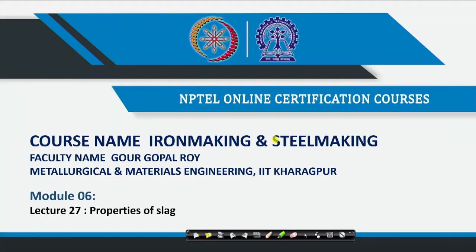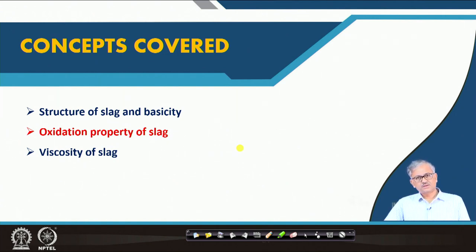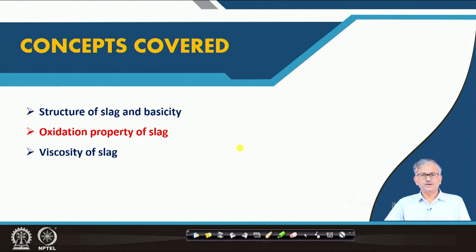This is the second lecture on steelmaking, module six, lecture number twenty-seven. I will talk about the properties of slags because steelmaking is nothing but a slag-metal reaction. We need to understand the slag structure and properties. In this lecture we will discuss the structure of slag, the concept of basicity, the oxidation property of slag, and viscosity of slag - these are the important properties.